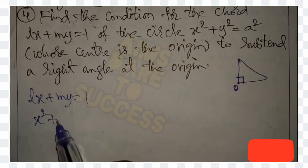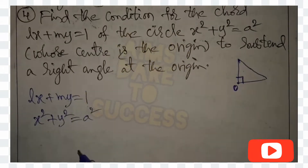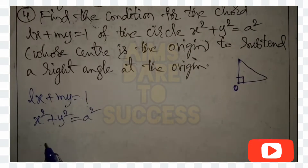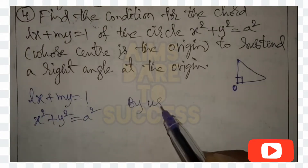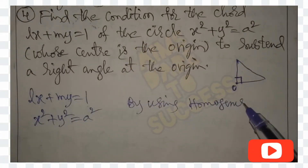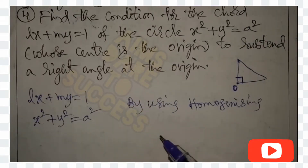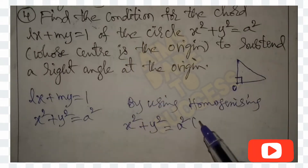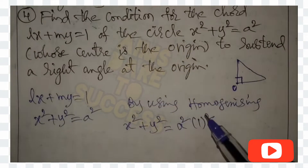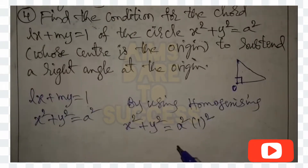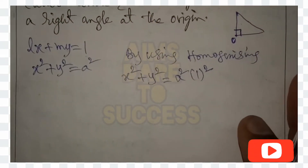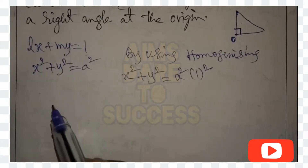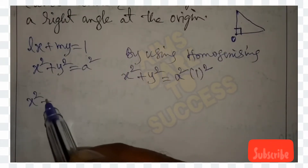We can use the homogenizing method. The given circle is x² + y² = a². There is no x-value or y-value term, so we take a constant multiplied by 1². So x² + y² = a² × 1². Now, since lx + my = 1, we substitute it: x² + y² = a²(lx + my)².